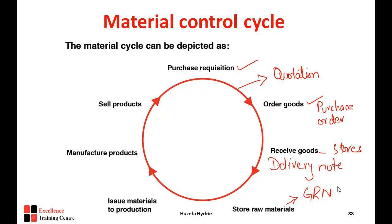If both the purchase order and goods received note reconcile, the accounts department makes the payment. Every payment in a company — whether to employees, suppliers, or for non-current assets — is always made by the accounts department. Once payment is made, the chapter of dealing with the supplier is closed.